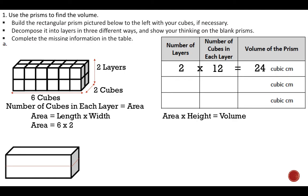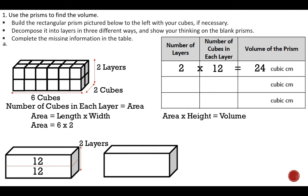It still has the same number of cubes on each layer — 12 cubes on the top layer and 12 cubes on the bottom. So I still have a height of two and 12 cubes in each layer. It's very similar to the first model; it just doesn't show each specific cube drawn out.